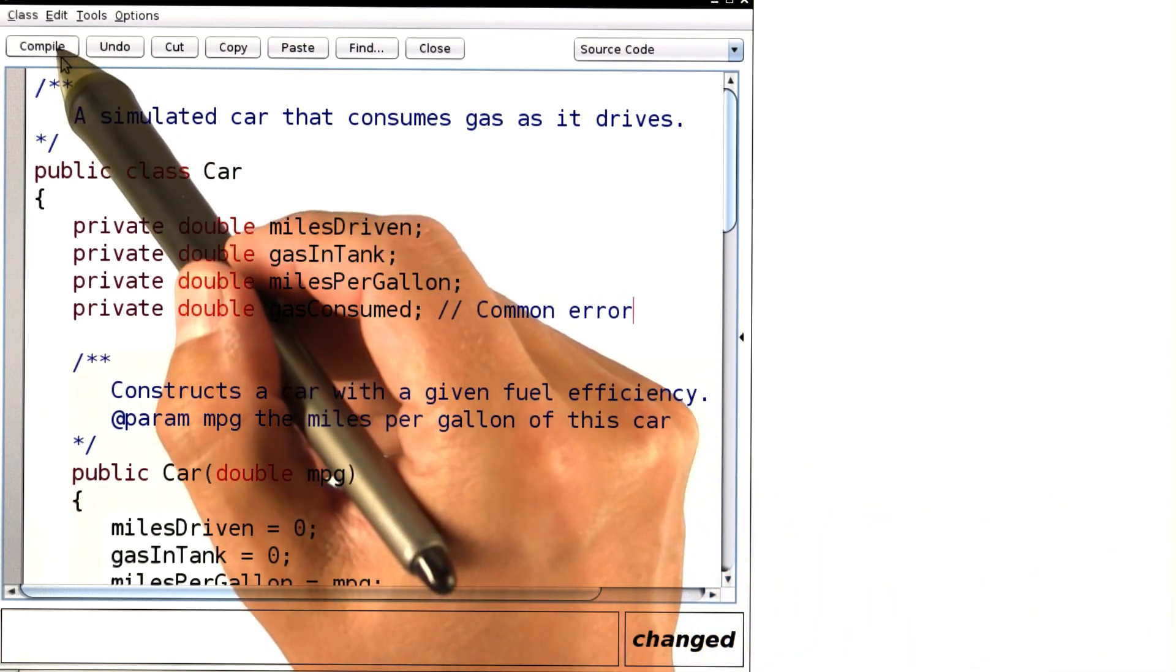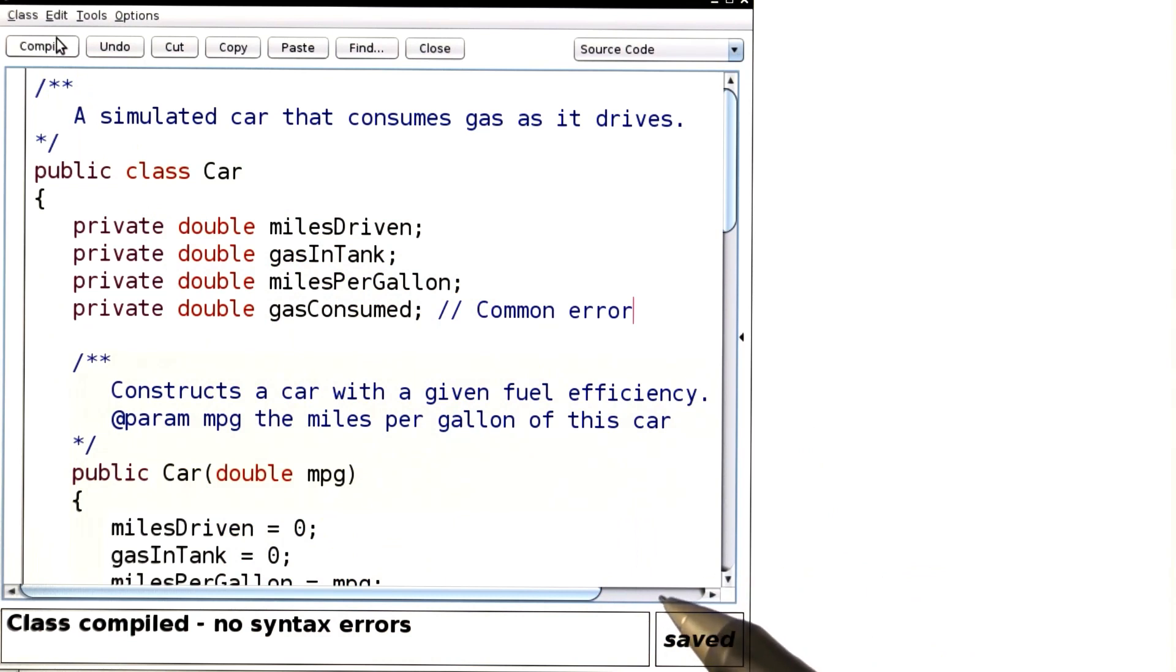So, on the surface, it doesn't seem like an error, because the class will compile. And actually, the code will kind of work, but it's really inelegant. Let's use the tracing technique to find out why.